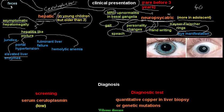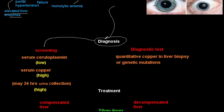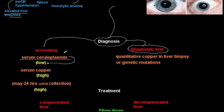To summarize the clinical picture: remember that neuropsychiatric manifestations are more common in older patients, while hepatic manifestations are more common in younger children. For diagnosis, we have screening tests and diagnostic tests. Screening includes serum ceruloplasmin, which is expected to be low.